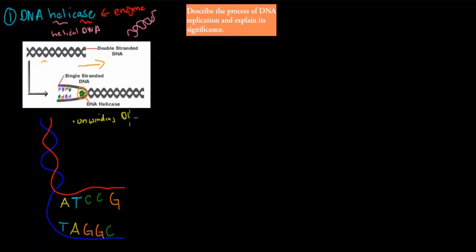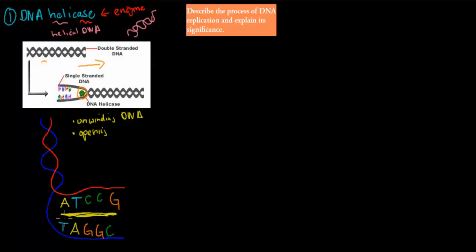Going from that helical structure into the open structure. You're unwinding and opening the DNA — the opening part means there is now space where something else can attach. There's space in between because these bonds between the two strands have been broken. There used to be hydrogen bonds between them, but they've been broken. That's what helicase does.